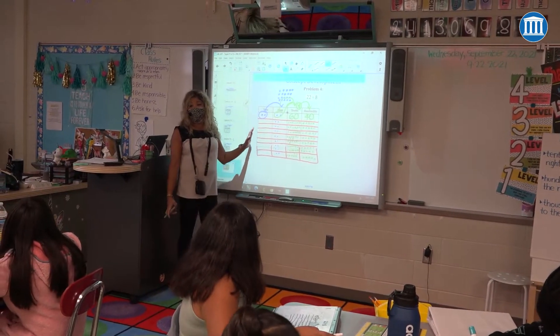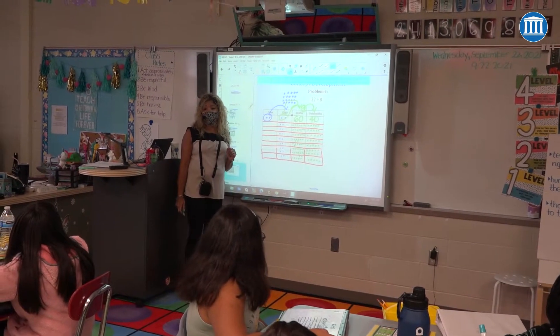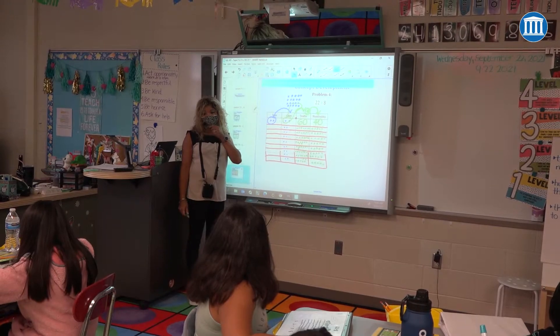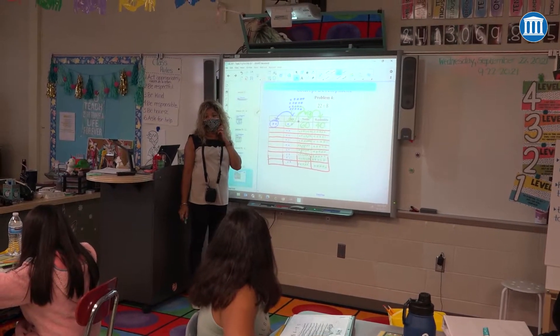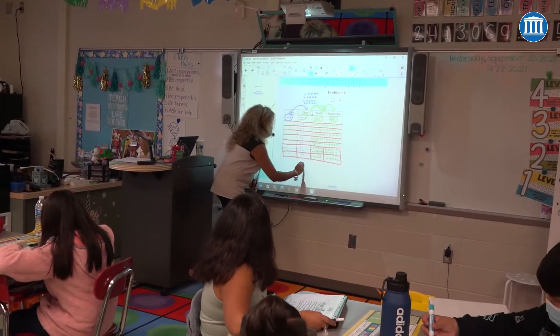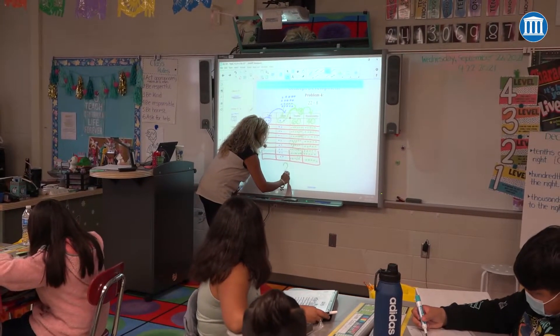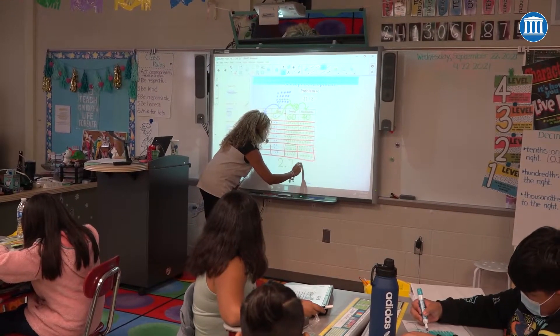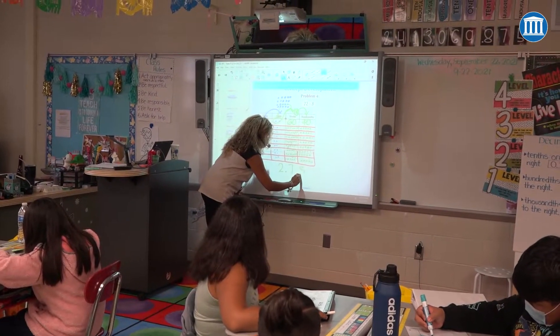How do I write my number in standard form? Christian? Two and seventy-five hundredths. Two and seventy-five hundredths.